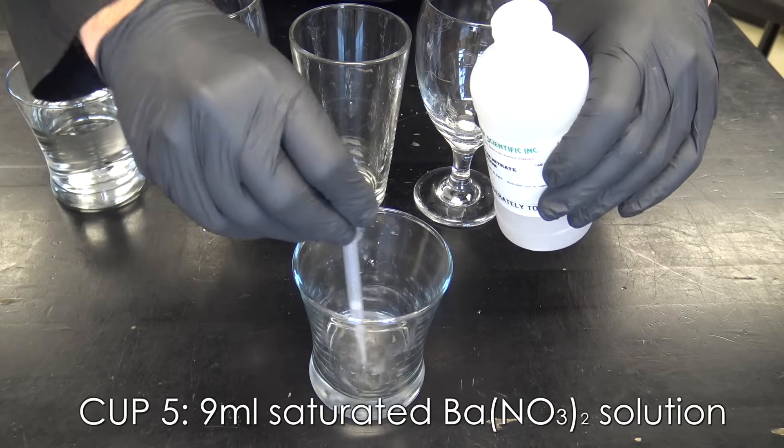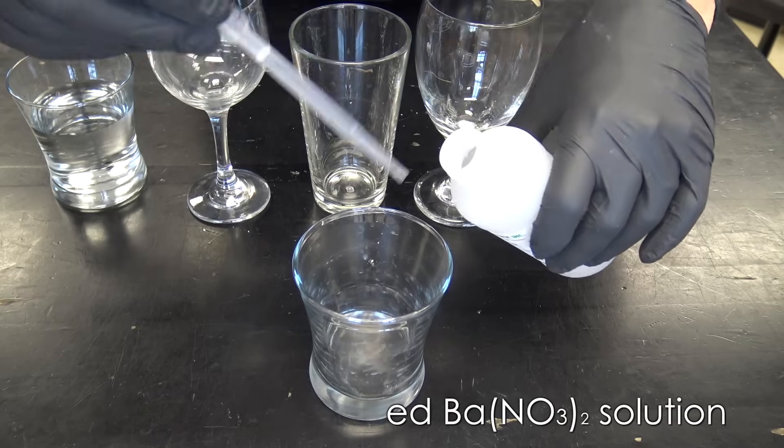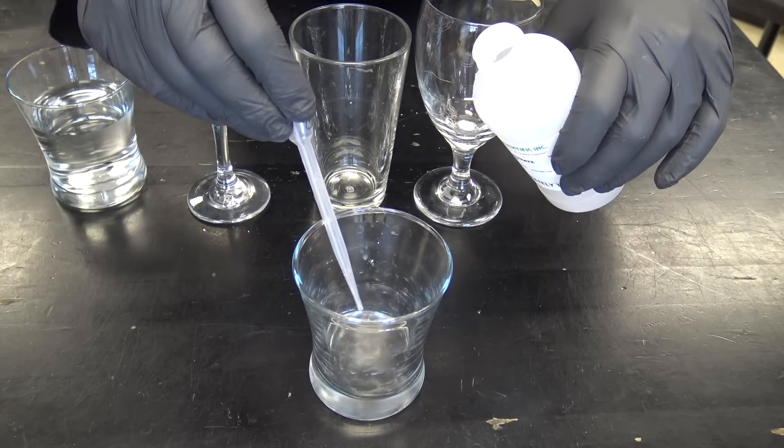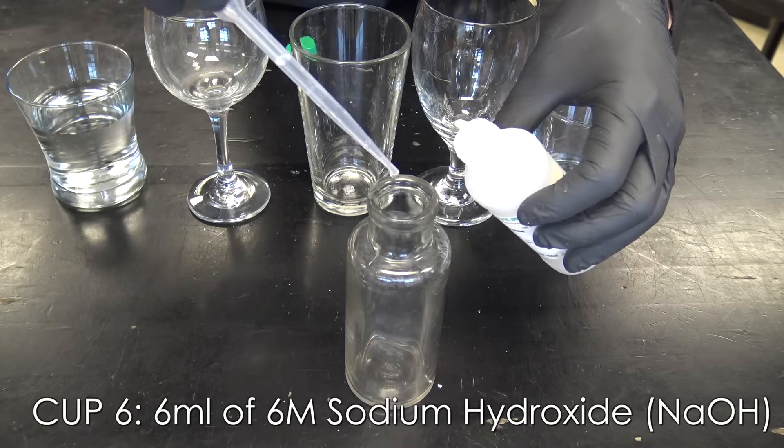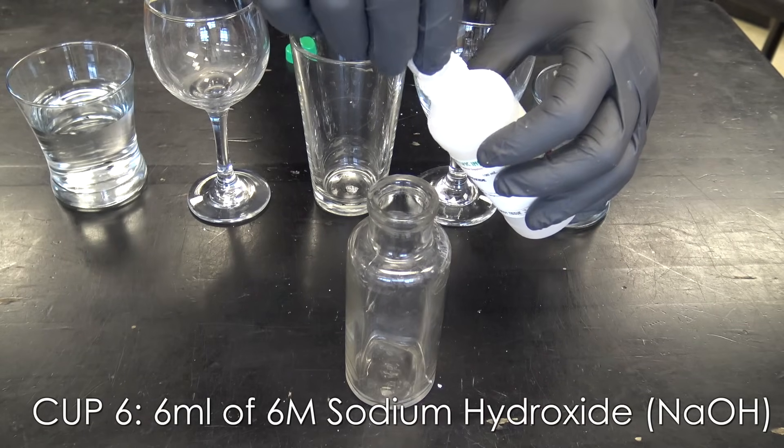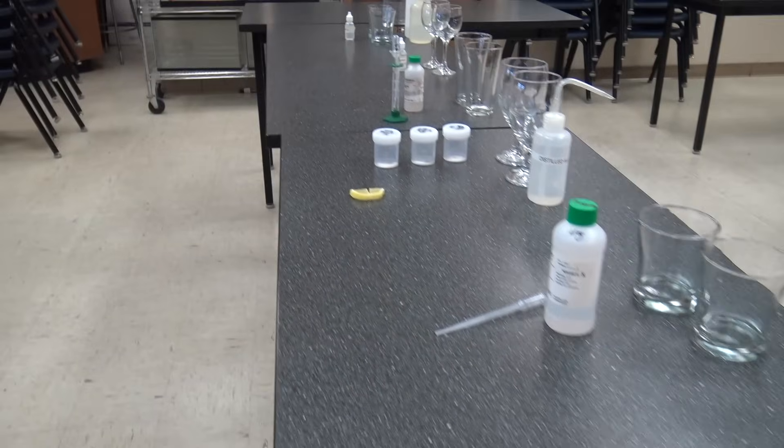In the next cup, cup five, we're going to use nine milliliters of saturated barium nitrate solution. That's going to make our milk when we mix all these together. And last but not least, in the final cup, we need six milliliters of six molar sodium hydroxide. One of the other reasons I'm wearing gloves.